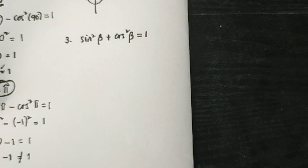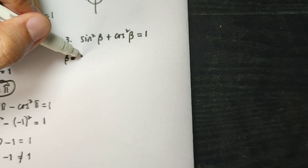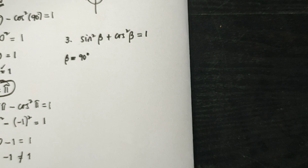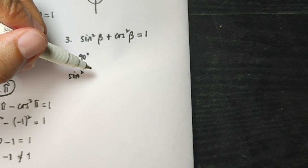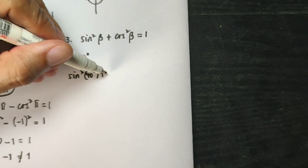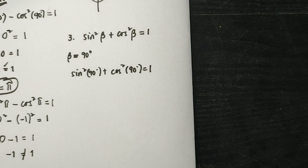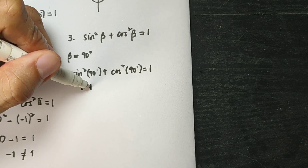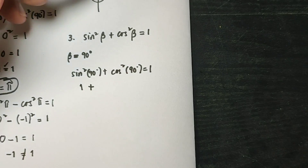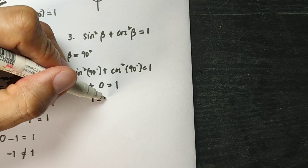Another example: we have sine squared theta plus cosine squared theta equals 1. Let us assign the value theta equals 90 degrees. We will have sine squared of 90 degrees plus cosine squared of 90 degrees equals 1. Sine of 90 degrees is 1, so 1 squared is 1. Cosine of 90 degrees is 0, so 0 squared is 0. Therefore 1 plus 0 is 1, equals 1.